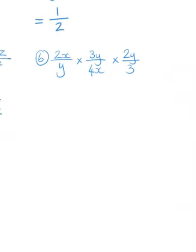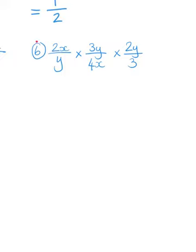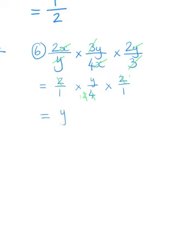Now let's go on to the last question — question 6, where we've got 3 fractions being multiplied by each other. We check for cancellations: x simplifies with x, 3 simplifies with 3, y simplifies with y, leaving 2 over 1, times y over 4, times 2 over 1. Then 2 cancels with 4 leaving 2, and 2 cancels with 2 leaving 1. So our final answer is y — because everything else cancelled out.